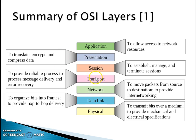The transport layer provides reliable process-to-process message delivery and error recovery. The sessions layer is used to establish, manage, and terminate sessions. The presentation layer is used to translate, encrypt, and compress data. And finally, the application layer is used to allow access to the network resources.